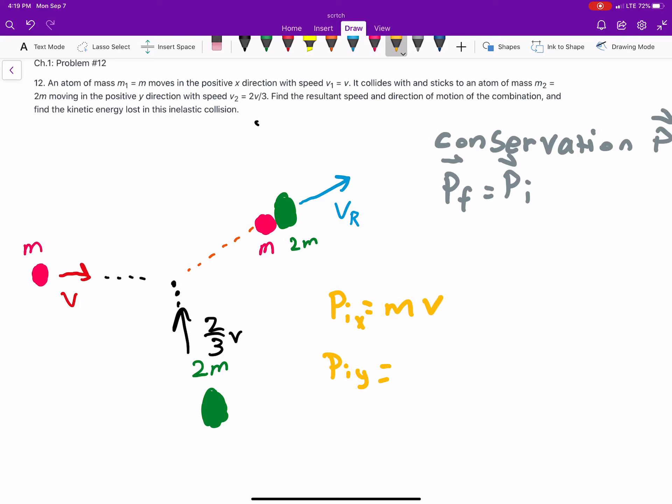which is 2m, times the velocity, which is 2/3 v. So, that's 4mv over 3. So, that's our initial, in the x and y.